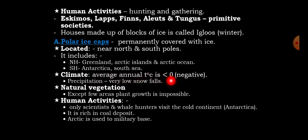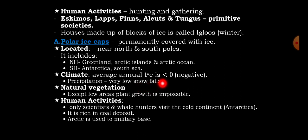The southern hemisphere includes Antarctica and the South Sea. The climate of the polar ice cap has an average temperature of less than zero degrees Celsius, which is negative temperature. The precipitation is very low — snowfall is very low and the temperature is very low due to the angle of the sun. Natural vegetation of the polar ice cap is absent except in a few areas, and plant growth is impossible due to frozen ground.